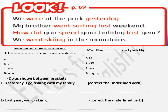On page 69: 'We were at the park yesterday' — where is the past 'to be'? 'My brother went surfing last weekend.' Last weekend means it was a past event, so we say 'went,' not 'go.' 'How did you spend your holiday last year?' This is how to ask a question using the past. Did you come? Did you finish? As long as we are talking about past events — last weekend, yesterday, 2018, three days ago — any past expression means we have to change the verb into the past. Be careful.